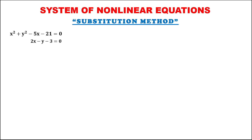For this problem, to find the solutions of the system of nonlinear equations using the substitution method. From this given, first, we need to isolate one variable and always choose the variable that has no exponent and no numerical coefficient. Since y is the variable that has no exponent and no numerical coefficient, therefore, we can isolate y.